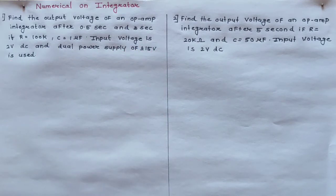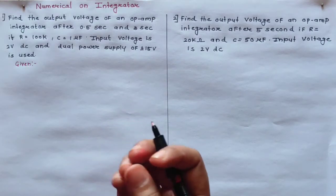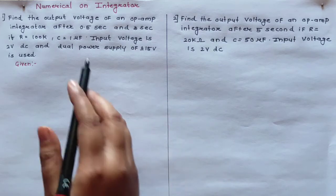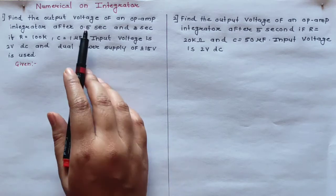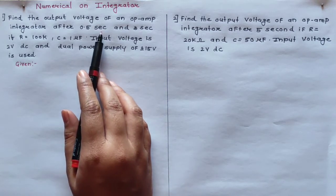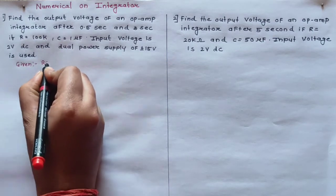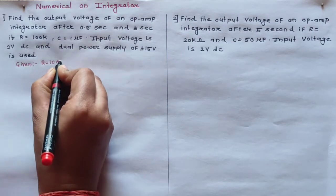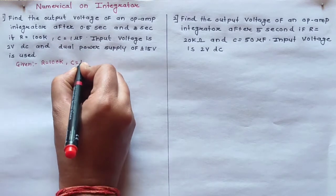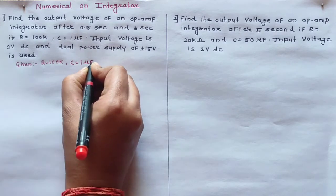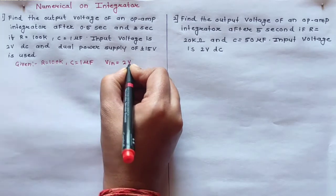So first of all write down the given data. They are providing you the time — after how many time you have to find the output voltage. For 0.5 second and after 3 second. R is nothing but the resistance value, that is 100k. The capacitance is given: C is equal to 1 microfarad, and the input voltage is 2 volt.